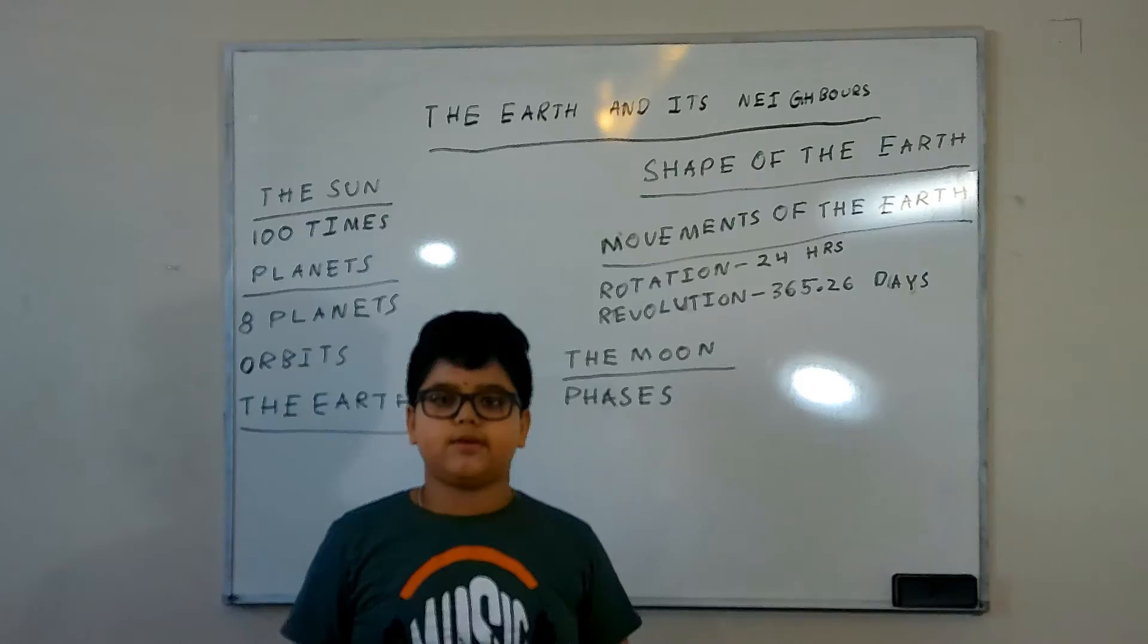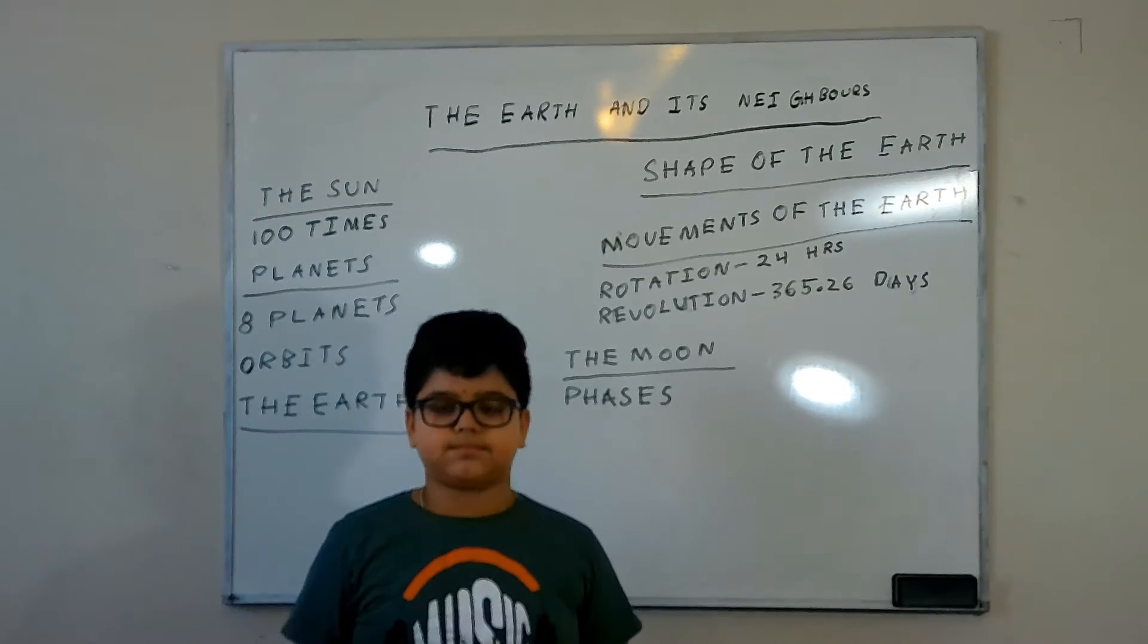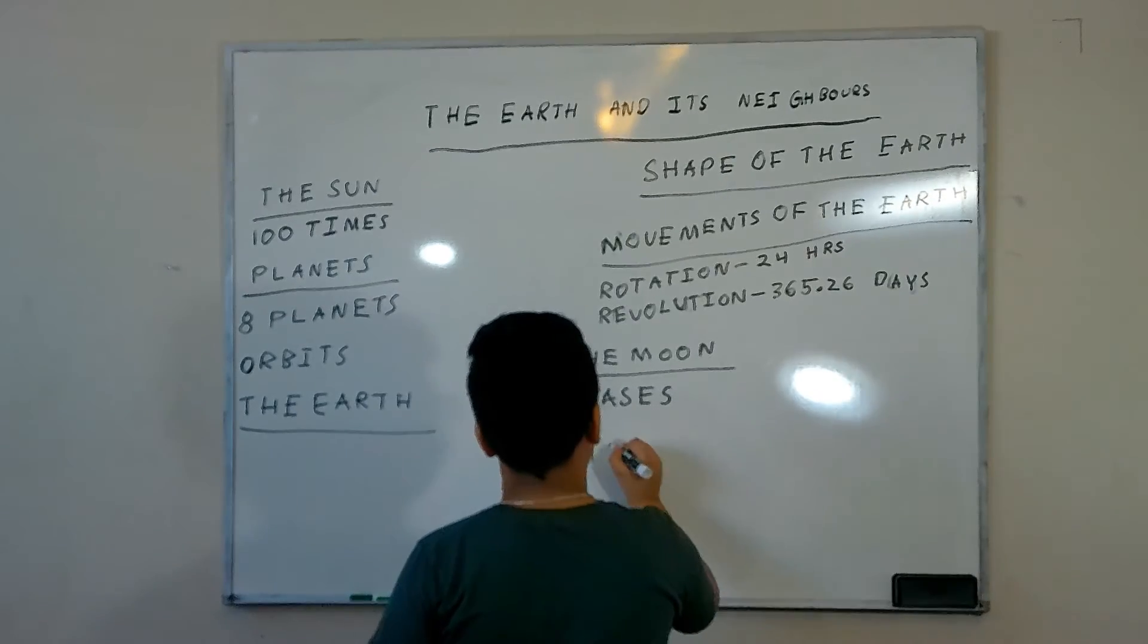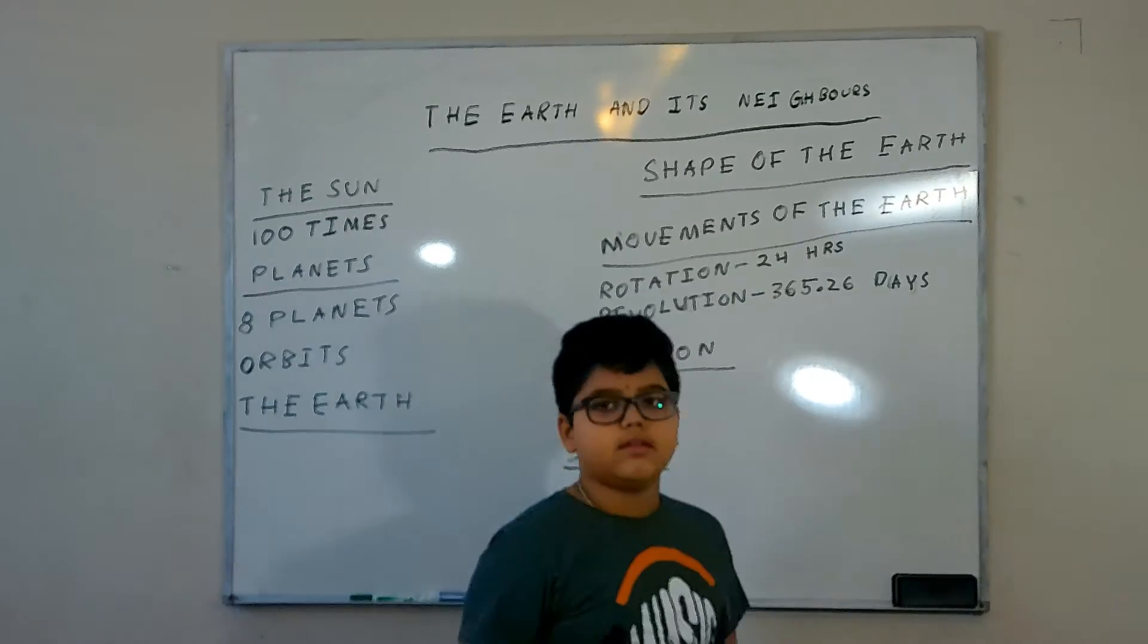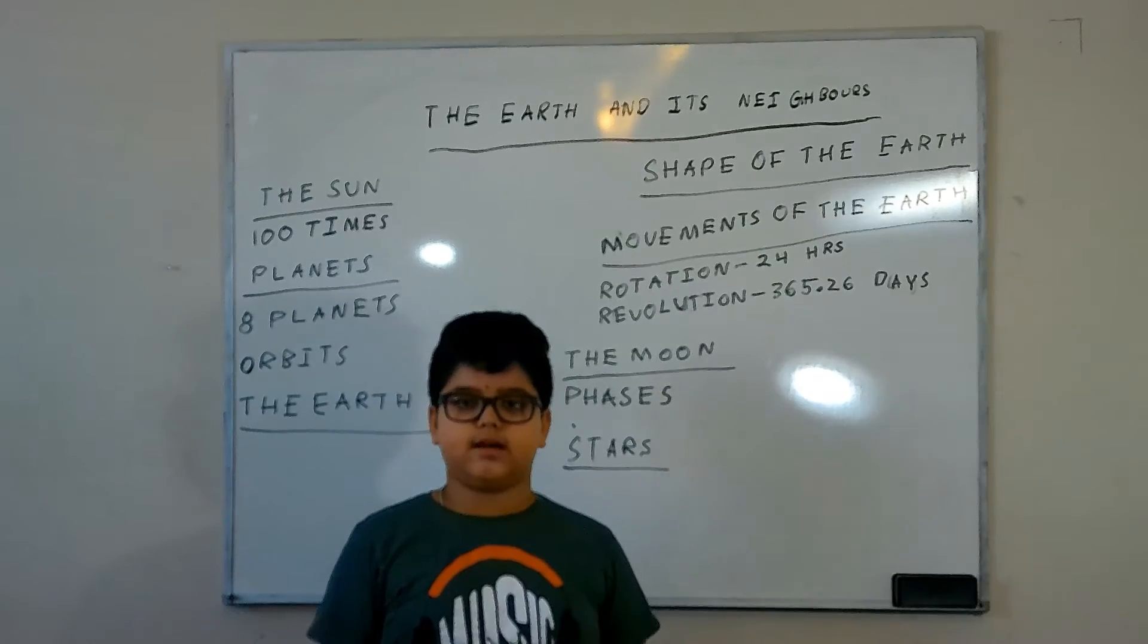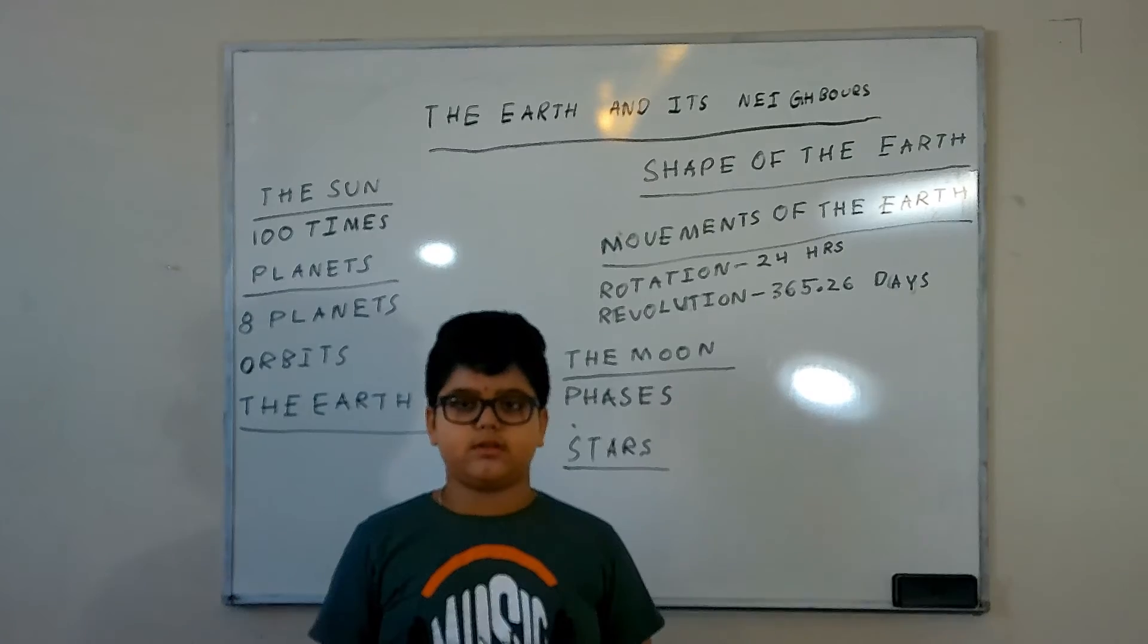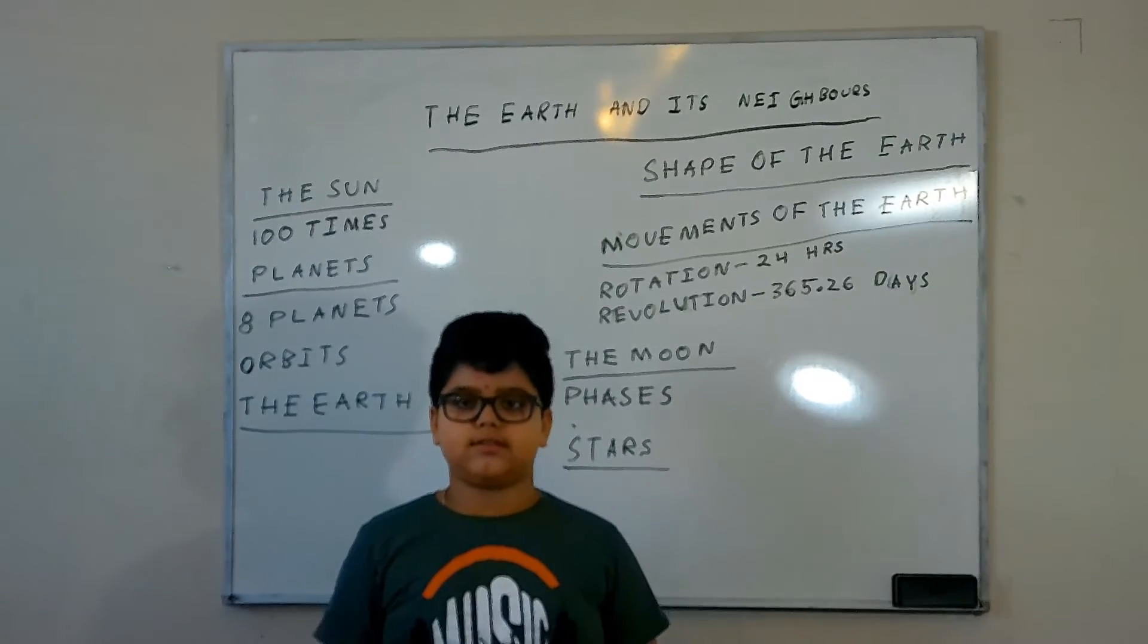The phases of moon depend on the position related to the earth and the sun. Now let's discuss about the stars. At night we see so many stars twinkling in the sky. Stars are huge balls of gases that have light of their own. The stars appear smaller and dim because they are far away from the earth. A group of stars forming a pattern is called constellation.